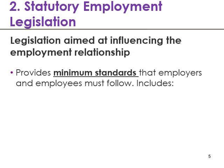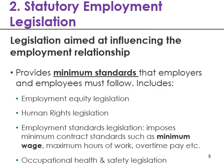The second regime of employment law is statutory employment legislation. You may have heard of the Employment Standards Act, the ESA. This provides a minimum standard for most employees working in Ontario, and it includes things like employment equity legislation, human rights legislation, and minimum standards when it comes to minimum wage, maximum hours of work, overtime pay, and also occupational health and safety legislation. It's important to note these are minimum standards set out by the Employment Standards Act.